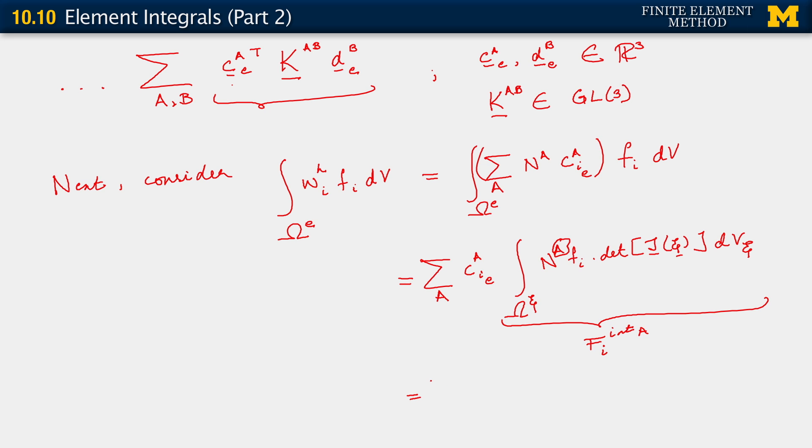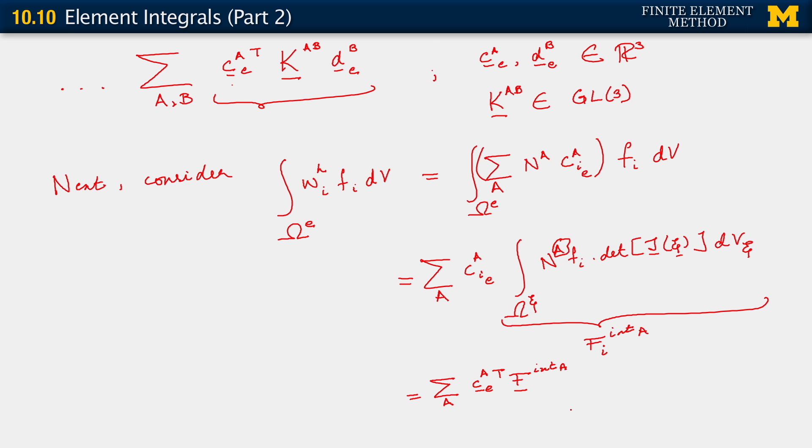And this also we could write as sum over A, using the notation we used to write out our left-hand side term. We have C_A^e transpose F_internal_A. At this point we've assembled the two somewhat easier integrals. We will return in the next segment to finish up the integral involving the traction terms.